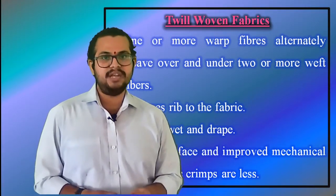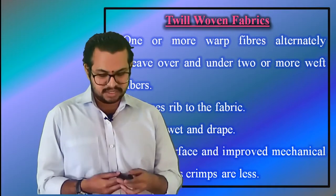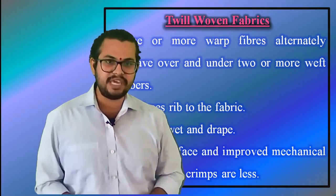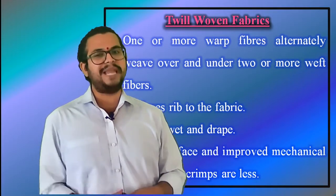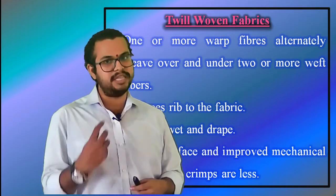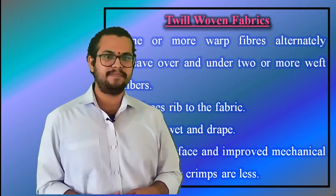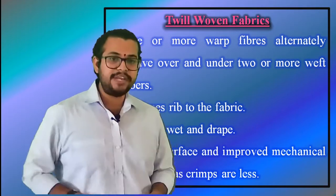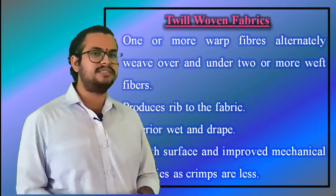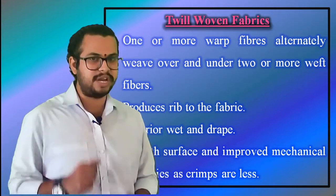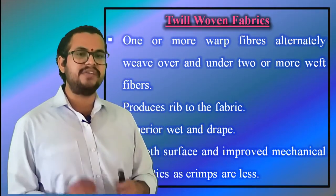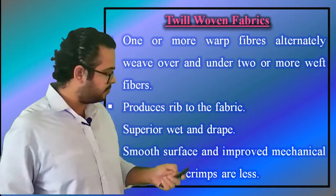Superior wet-out and drape is seen in the twill weave over the plain weave with only a small reduction in stability. With reduced crimp, the fabric also has a smoother surface and slightly higher mechanical properties.